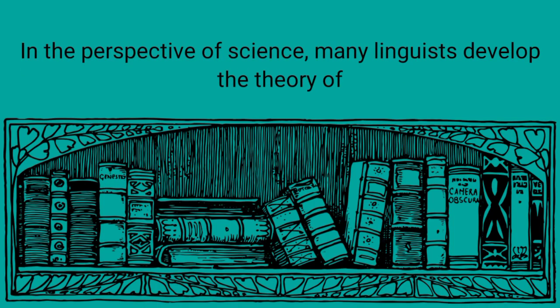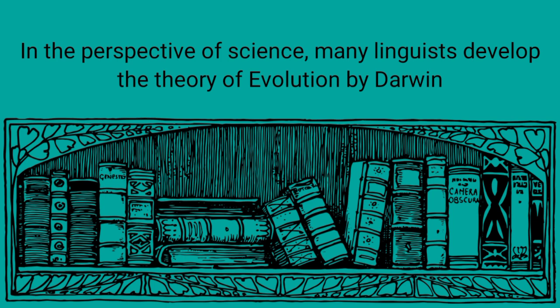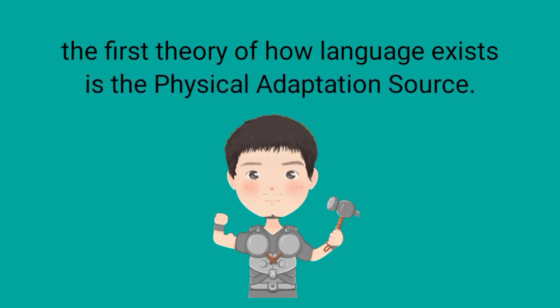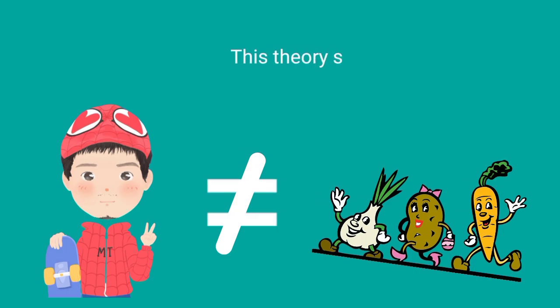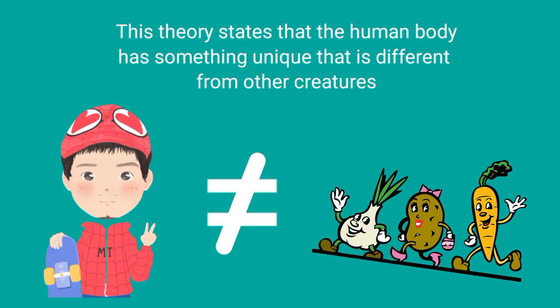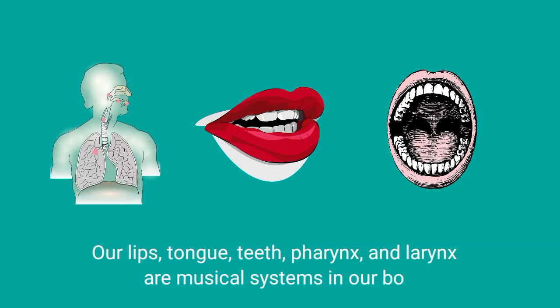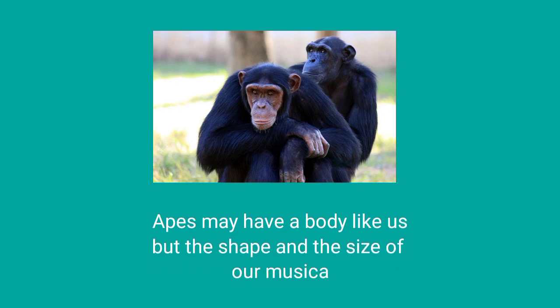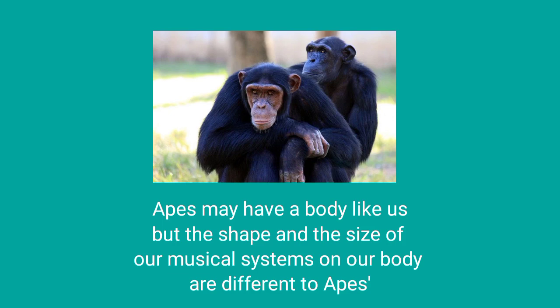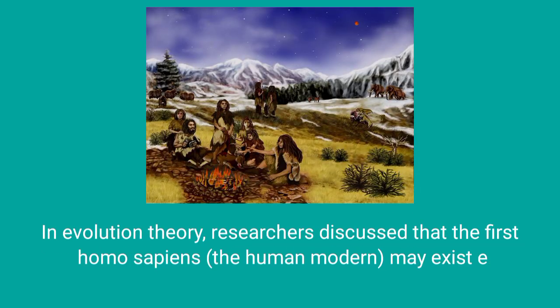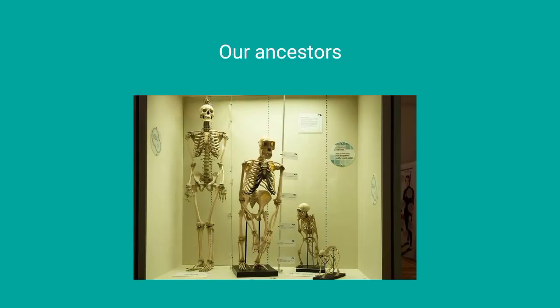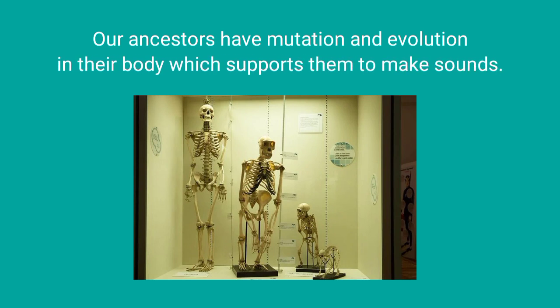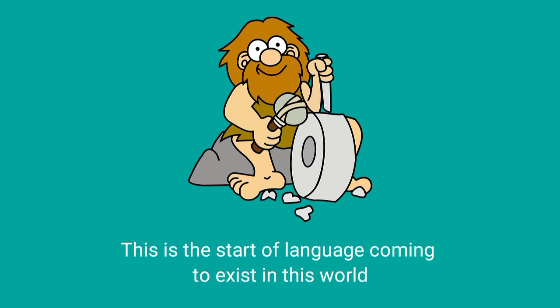From the perspective of science, many linguists develop the theory of evolution by Darwin. The first theory of how language exists is the physical adaptation source theory. This theory states that the human body has something unique that is different from other creatures. Our lips, tongue, teeth, palate, and larynx are articulatory systems in our body — they have roles to produce sounds when we speak. These are different from apes. Apes may have a body like us, but the shape and size of our articulatory systems are different, which is why they can't speak the way we do. In evolution theory, researchers discuss that the first Homo sapiens may have existed 300,000 years ago. Our ancestors had mutations and evolution in their bodies which supported them in making sounds — this is the start of language coming to exist in this world.